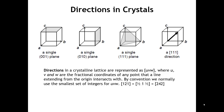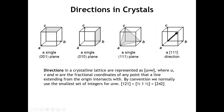If we look at the vector shown on the right-hand image, we can see that the vector as drawn starts at the origin and intersects the unit cell at the opposite corner. That would be one lattice vector in the A direction, one in the B direction, and one in the C direction. Adding those three lattice vectors gives the endpoint of this vector, so we call this the 1-1-1 direction.